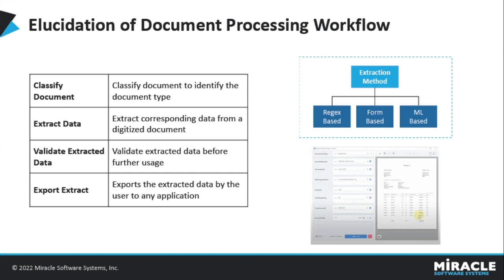Once the data has been extracted, the next step is to validate it. UiPath offers a Validation Station — the Validate Extracted Data activity — where you get all the fields that need to be extracted, and it highlights from where each extraction was made. Depending on the confidence score of the extraction, you can choose which extraction to keep. If you are not satisfied with any extraction, you can directly indicate on the screen and change it.